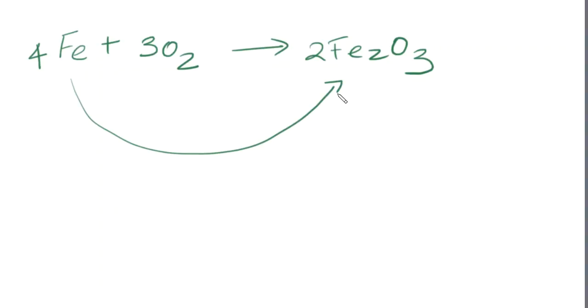So iron is being oxidized and oxygen is being reduced. So let's write the reaction one more time. 4Fe plus 3O2 gives 2Fe2O3. We said that iron going from here to here was being oxidized, and oxygen going from here to here was being reduced.